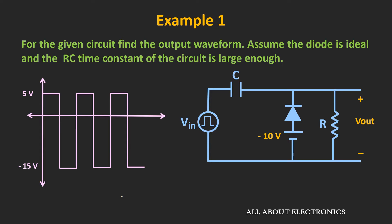In the previous videos of the clamper circuit, I have already explained the circuit analysis in detail. So here, instead of going through the entire circuit analysis, I will show you the shortcut method using which you can easily solve problems based on this clamper circuit. If you observe the circuit, without this biasing voltage, it is the positive clamper circuit.